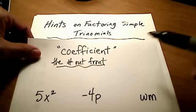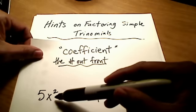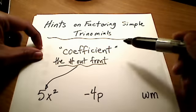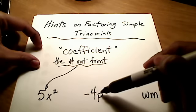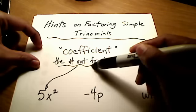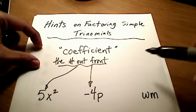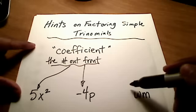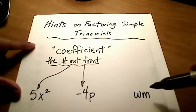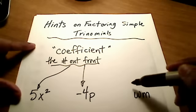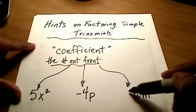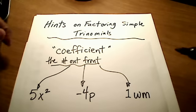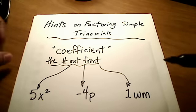So what is the coefficient for this first term? Well, it's just a 5. The coefficient there is just a 5. The coefficient for this negative 4p is just a negative 4. What if you see something like wm and there is no number out front — no coefficient? Well, if you don't see one, there actually still is a coefficient, and it's an understood 1. You could write it in if you wanted to.